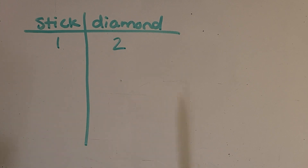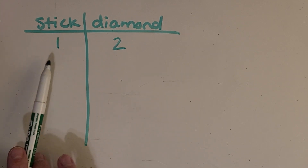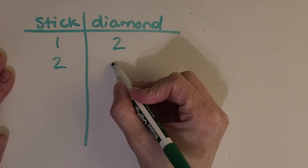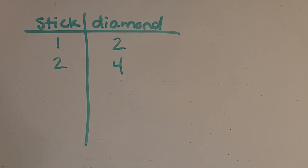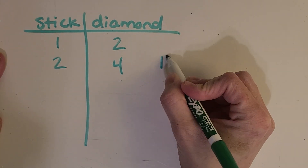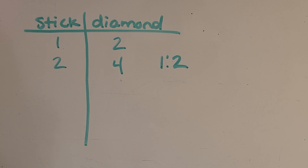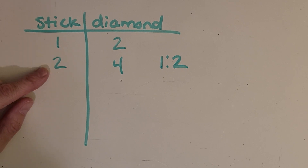To make one diamond sword, I just need one stick and two diamonds. Now I can start thinking about what if I want to make two diamond swords — what resources do I need? Two sticks and four diamonds. To know that it's following the correct ratio of one to two, you can just think about patterns. I'm doubling this, so I'm also doubling this.